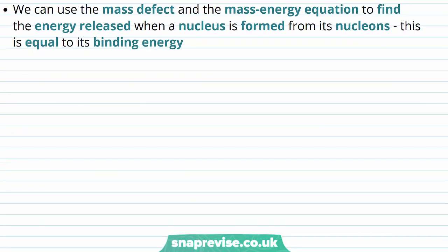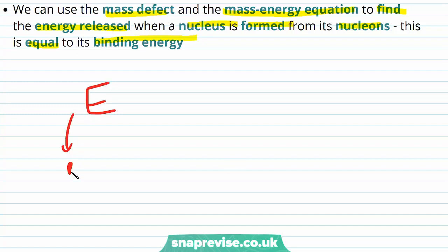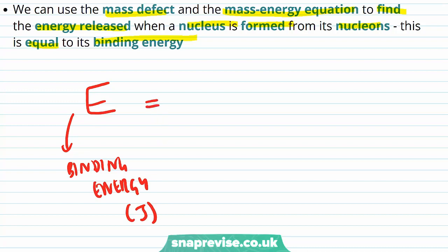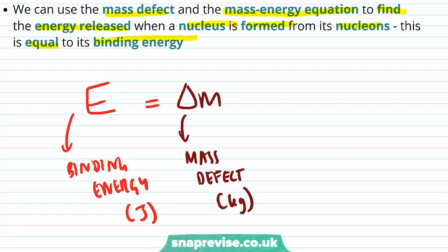We can use the mass defect and the mass-energy equation to find the energy released when a nucleus is formed from its nucleons — this is equal to its binding energy. The binding energy E is equal to the mass defect Δm times the speed of light squared: E = Δm·c².